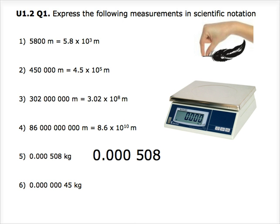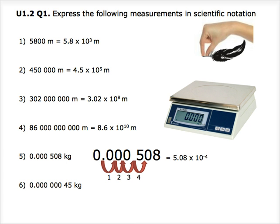Question 5 is a little different from the ones above, because the value is much smaller. Thus, we would have to move the decimal point towards the right instead. This means that we have to move it 4 times to the right to give us a coefficient of 5.08. Thus, our final answer is 5.08 times 10 to the power of negative 4. Note that 10 is raised to a negative power because the decimal point moves towards the right.